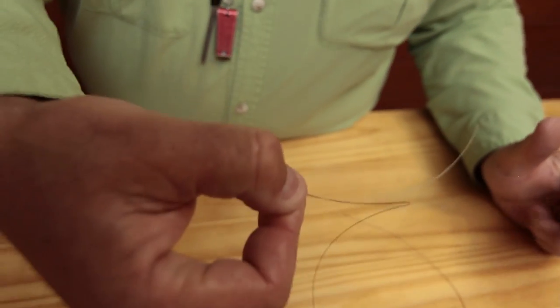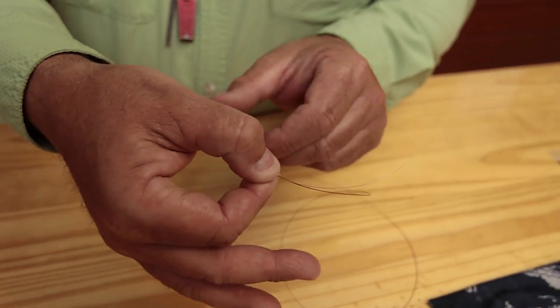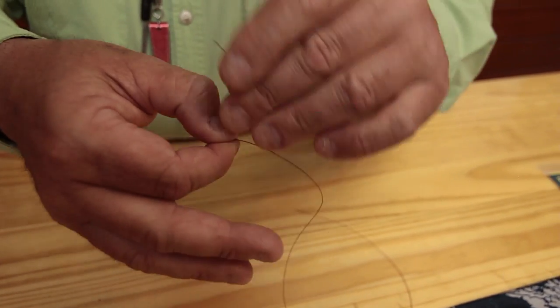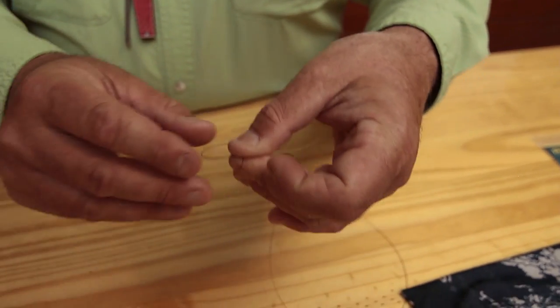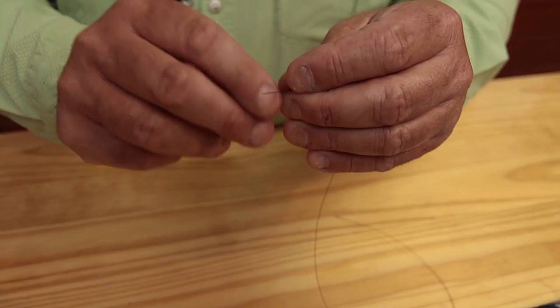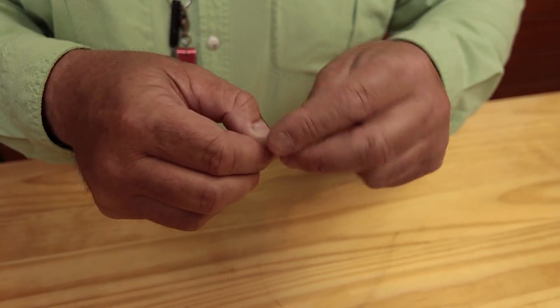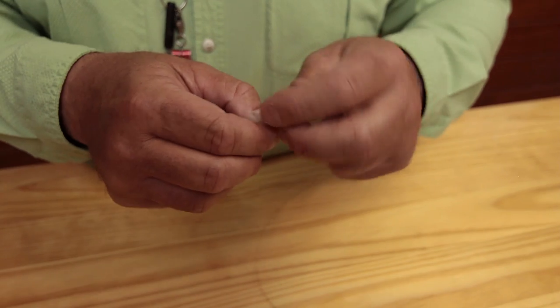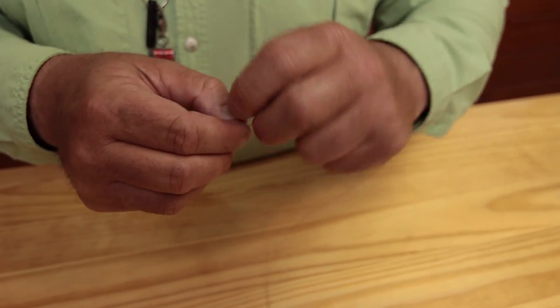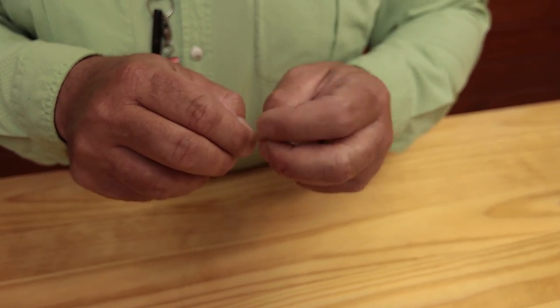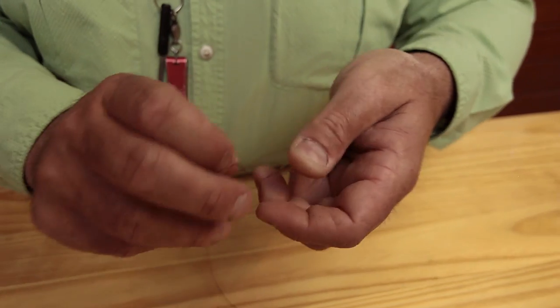So I'll lay the two lines together, form a loop, and now I take my tag end and I wrap around both of the leader materials. And I'll wrap probably four to five times with the smaller ten pound line. If I'm musky fishing, I'll only wrap usually three, because I don't want a real big bulky knot. So I pull that tight.